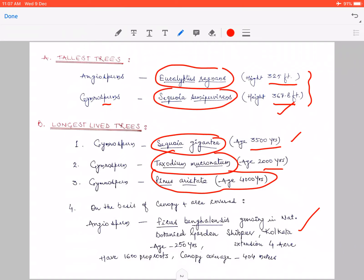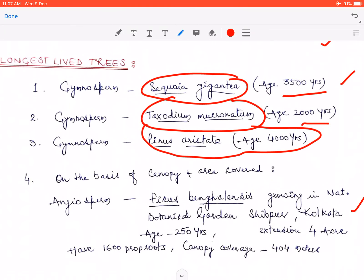Ye jo Ficus benghalensis ye jo tree hai, iski jo age hai woh lagbhag 2250 saal ke karib mani gayi hai. Aur area coverage jo hai iska more than four acres hai, yani ye tree karib 4 acres se jyada area mein faila hua hai. Aur iski lagbhag 1600 ke karib iske andar prop roots lagi hui hain.